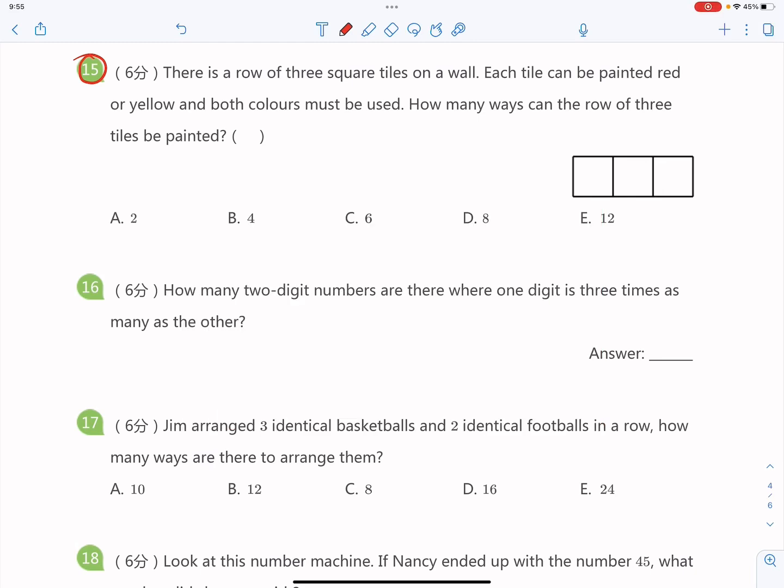Midterm Exam Solution question number 15. There is a row of three square tiles on a wall. Each tile can be painted red or yellow, and both colors must be used. How many ways can the row of three tiles be painted?